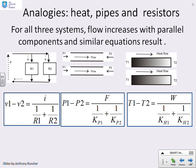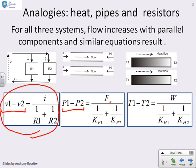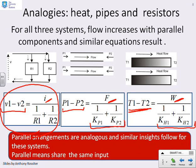Let's put all these expressions together and look at analogies. For electrical circuits: V1 minus V2 gives current I divided by (1 over R1 plus 1 over R2). For two pipes in parallel: P1 minus P2 gives flow rate F with the same structure — (1 over Kp1 plus 1 over Kp2). For heat conductors: T1 minus T2 gives energy flow rate W with (1 over KH1 plus 1 over KH2). Parallel arrangements for these different systems are analogous — we get similar insights for all of them.